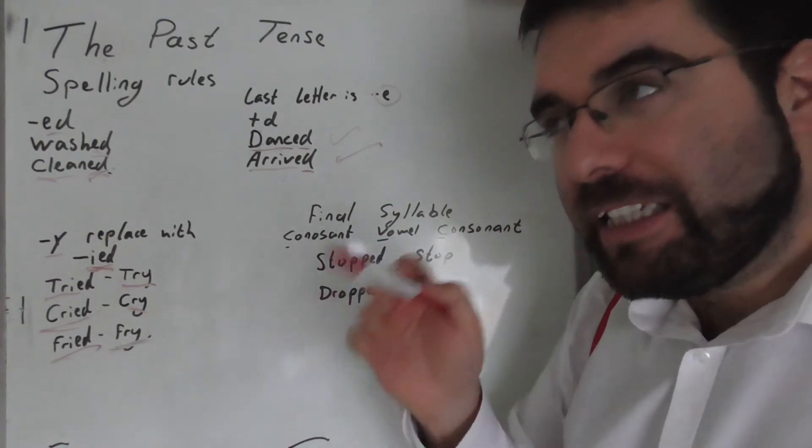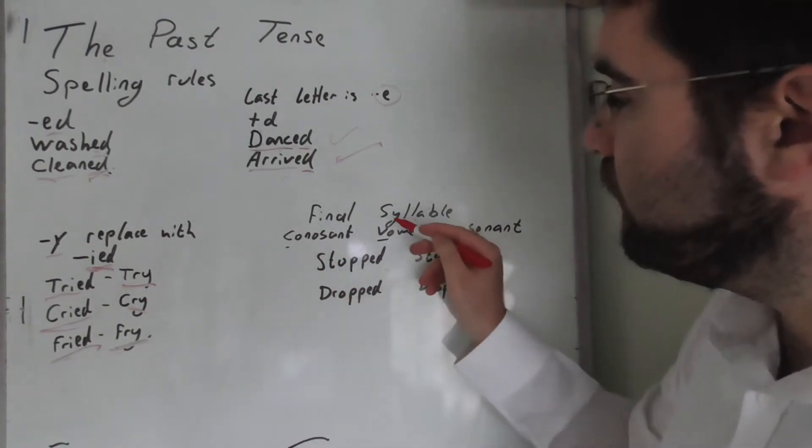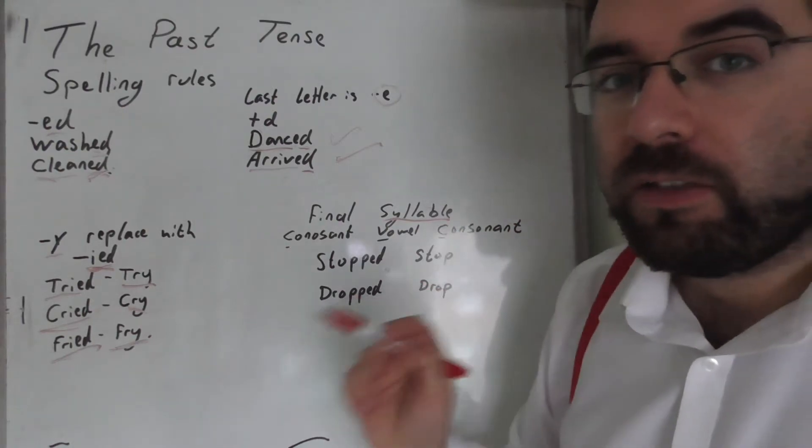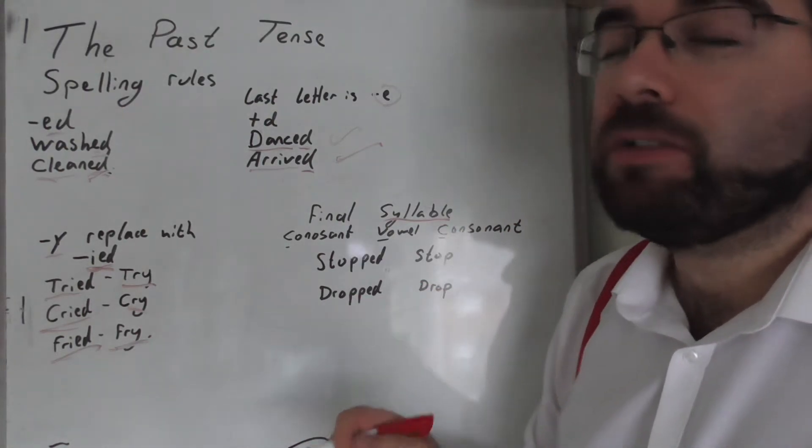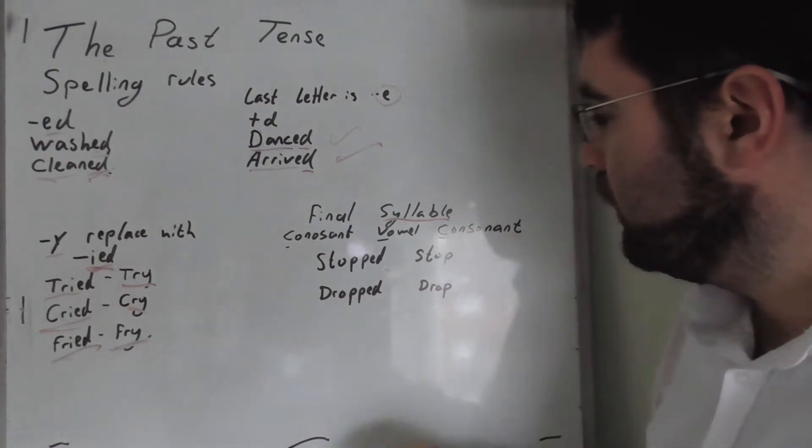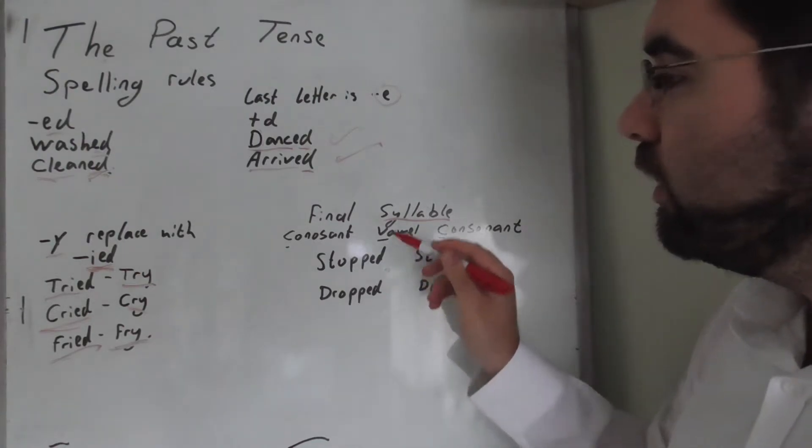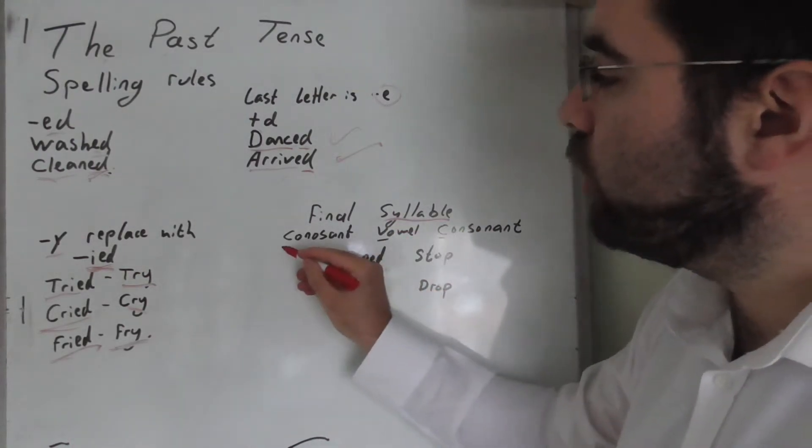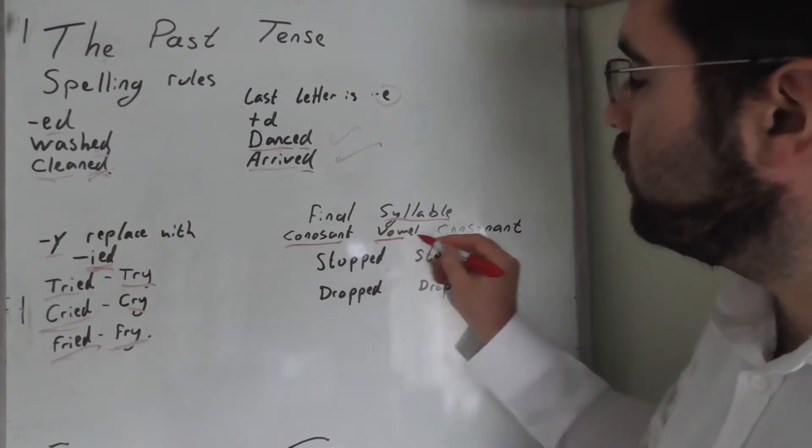But where it gets a little more complicated is the final syllable, the final sound made within the verb. So stop - one syllable with a consonant-vowel-consonant ending.